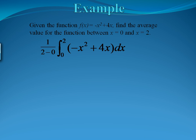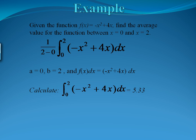So the first step is to calculate just the integral. When we calculate the integral from 0 to 2 of negative x squared plus 4x dx, that gives us an area under the curve of 5.33.